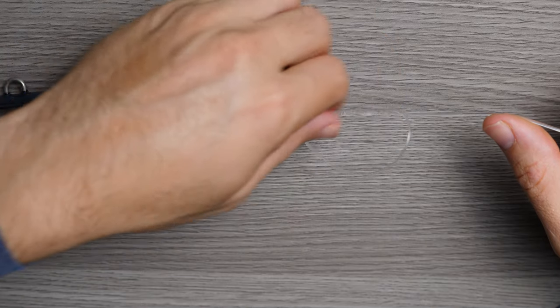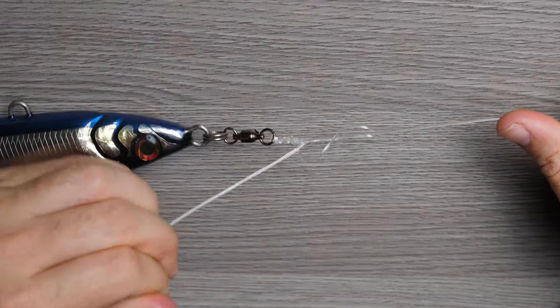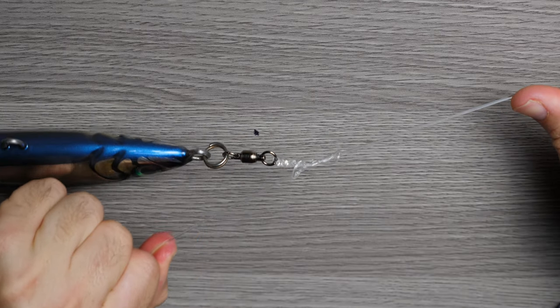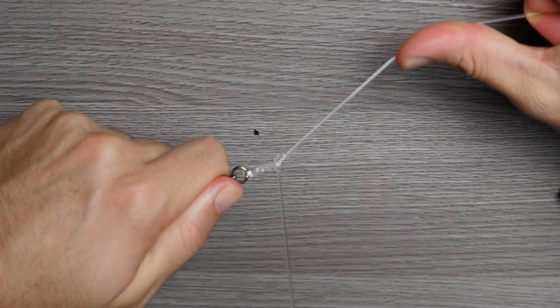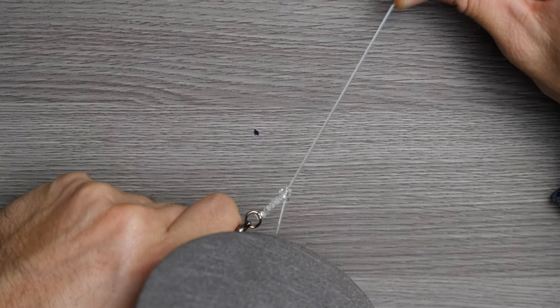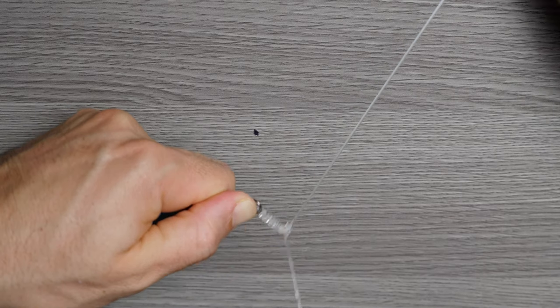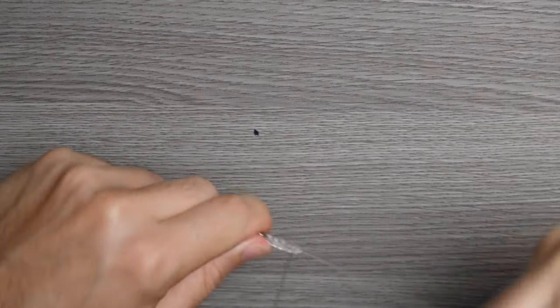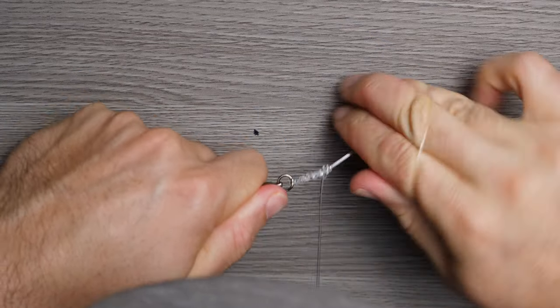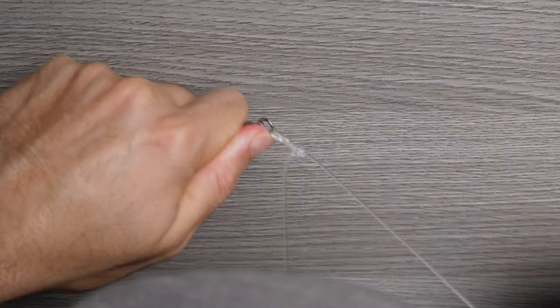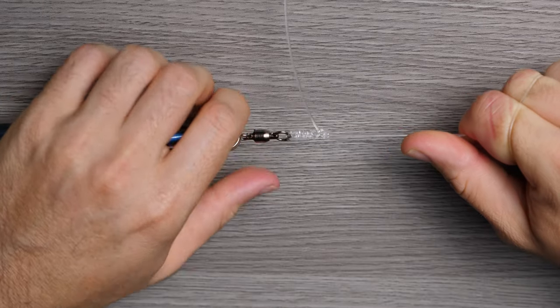And you're going to properly lubricate that with whatever water you have. In this case, I'm using saliva because that's all I have on me. And we're going to pull that down and you're going to see it's going to come down really nicely there. You guys see that? And you want to make sure, keep an eye on that knot, make sure it's working in exactly how it should work.